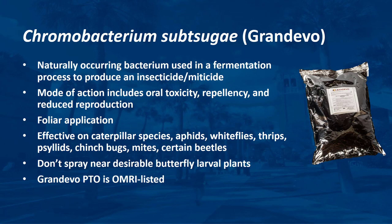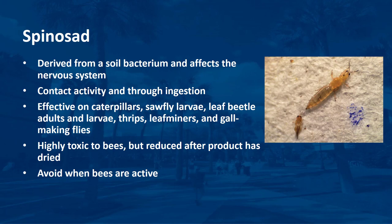Grandivo PTO is an OMRI-listed product. Spinosad is derived from a soil bacterium and affects the nervous system of insects and mites. It has contact activity but is even more active when ingested. Several products containing spinosad are labeled for ornamental and agricultural uses to control a broad spectrum of pests including caterpillars, sawfly larvae, leaf beetle adults and larvae, thrips, leaf miners, and gall-making flies. Spinosad is highly toxic to bees. However, toxicity is greatly reduced once the product has dried on the foliage, within 3 hours to 1 day depending on the product. Therefore, avoid use when bees are active and, if applications are needed, apply in the evening when bees are not active and the product has time to dry. This product suppresses a broad number of caterpillar species and should not be sprayed or allowed to drift in known habitats for threatened or endangered species. Some spinosad products are OMRI listed and on the EPA reduced-risk list.